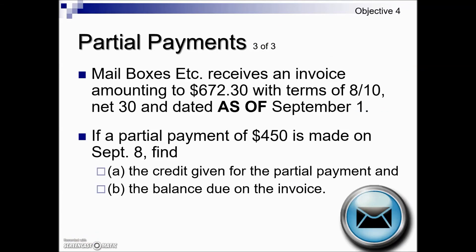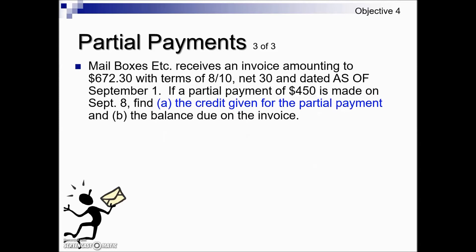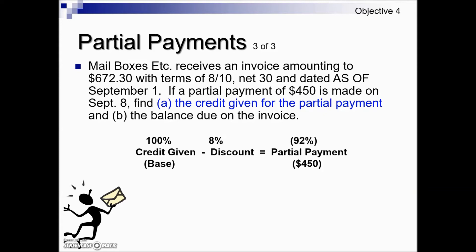In this next example, Mailboxes Etc. receives an invoice of $672.30 with terms of 8% discount if paid in 10 days, otherwise net in 30 days, dated September 1. A partial payment of $450 is made on September 8. We need to find the credit given and the balance due. First, we determine whether they met the criteria for the 8% discount: with September 1 as the date of interest and 10 days to pay, a payment on September 8 clearly qualifies.